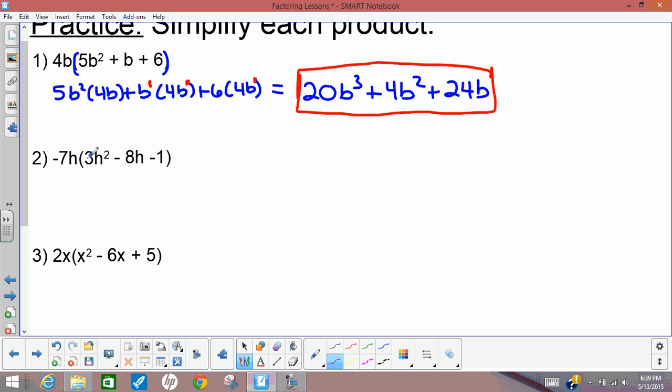So same idea here. Everything in here gets multiplied by negative 7h. So you should have gotten negative 21h to the third plus 56h squared plus 7h.